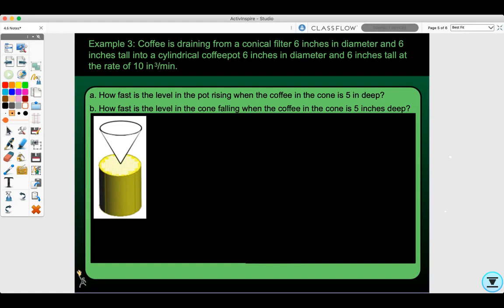Let's look at Example 3. Coffee is draining from a conical filter 6 inches in diameter and 6 inches tall into a cylindrical coffee pot 6 inches in diameter and 6 inches tall at the rate of 10 cubic inches per minute. Part A: How fast is the level in the pot rising when the coffee in the cone is 5 inches deep? Part B: How fast is the level in the cone falling when the coffee is 5 inches deep?